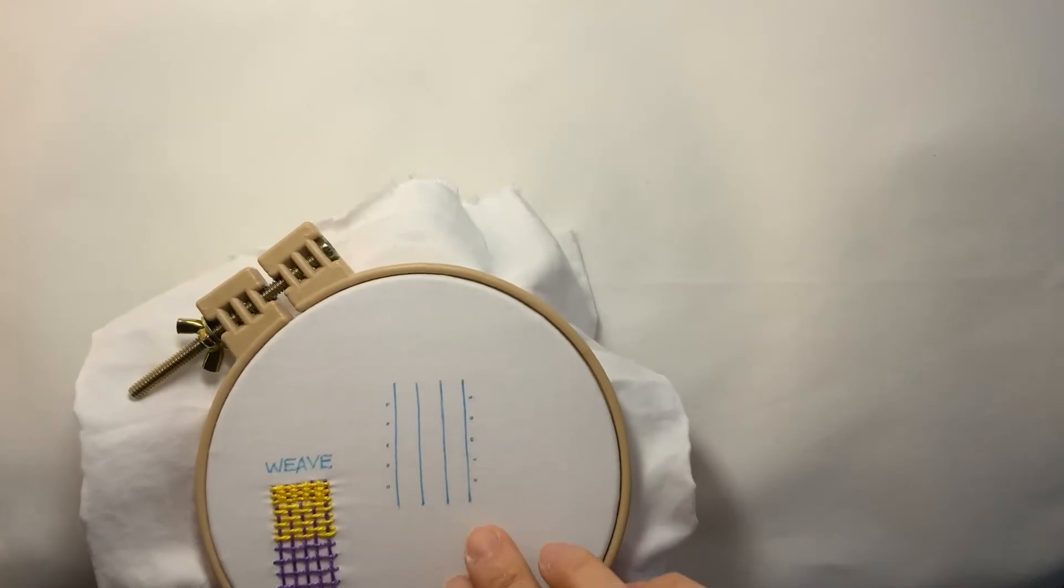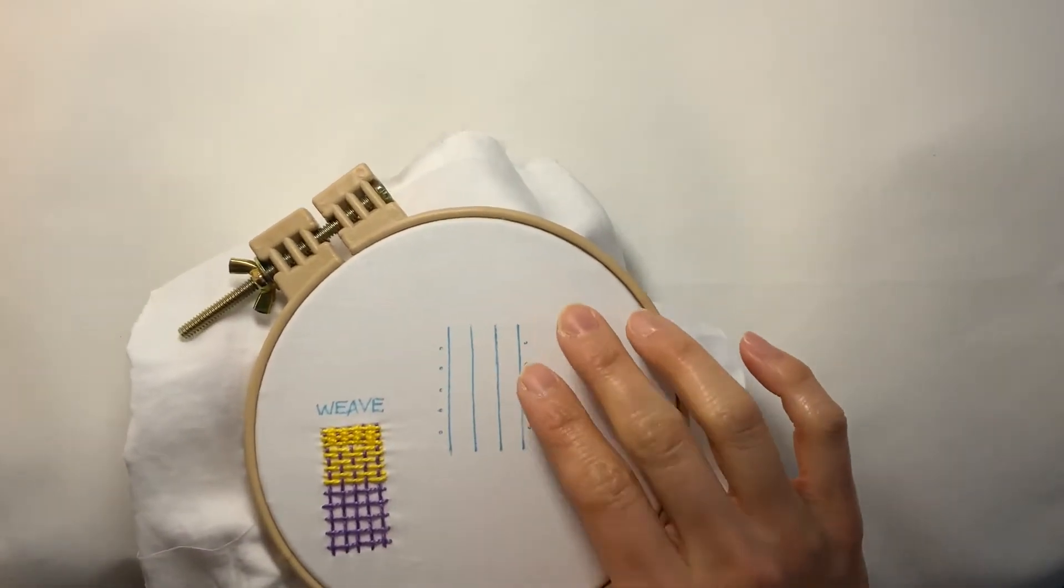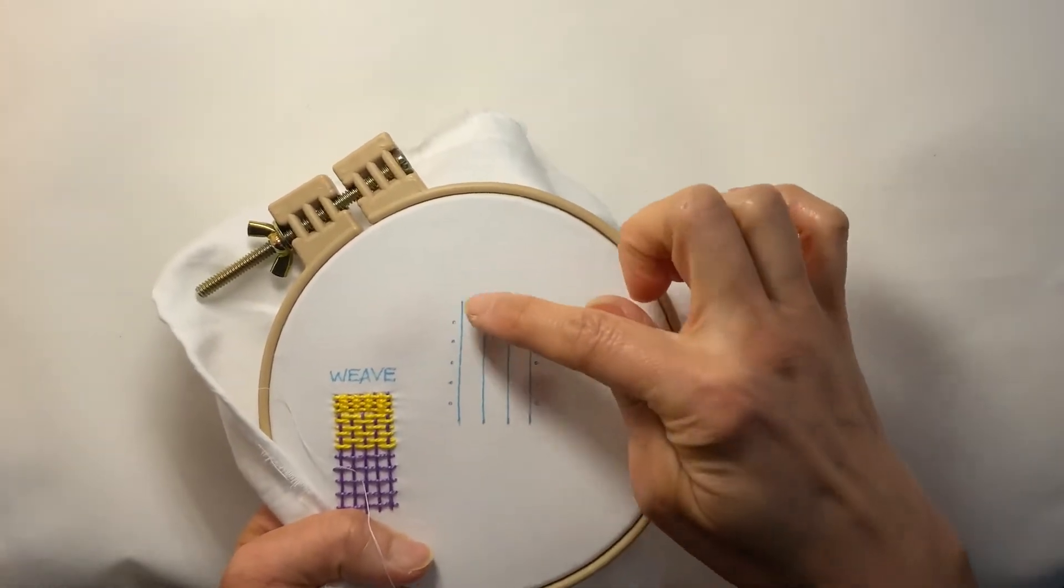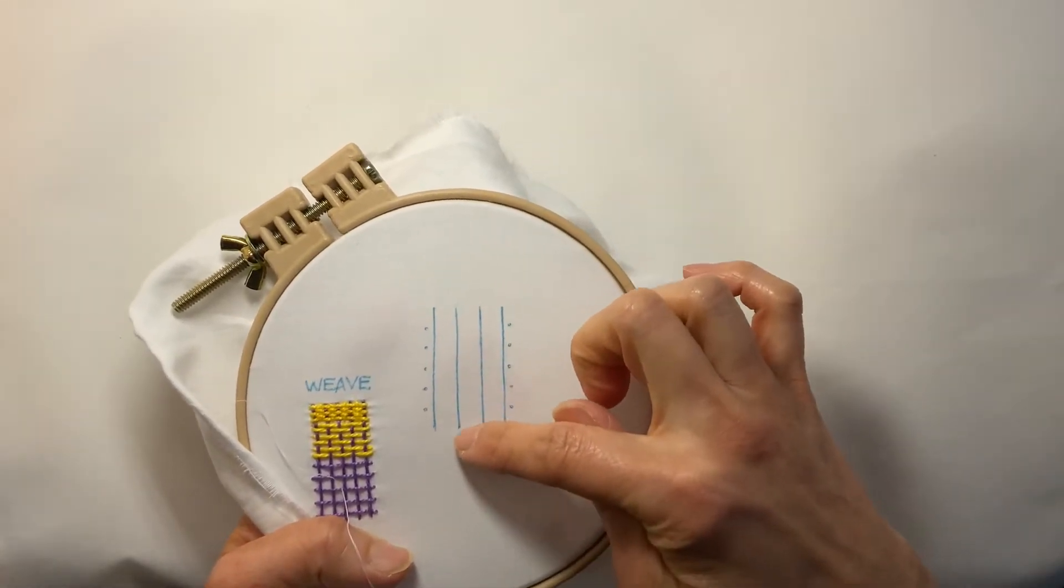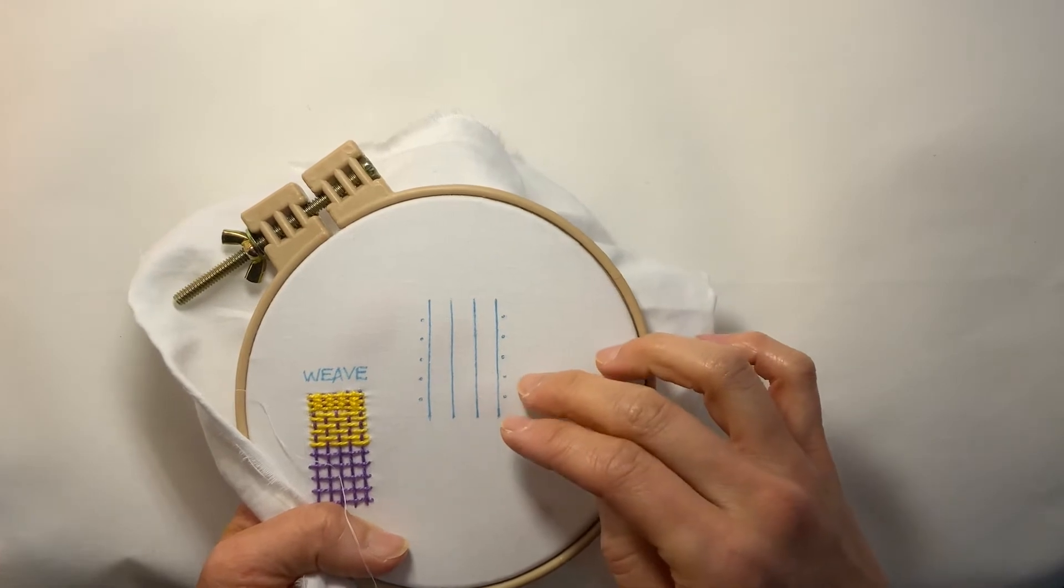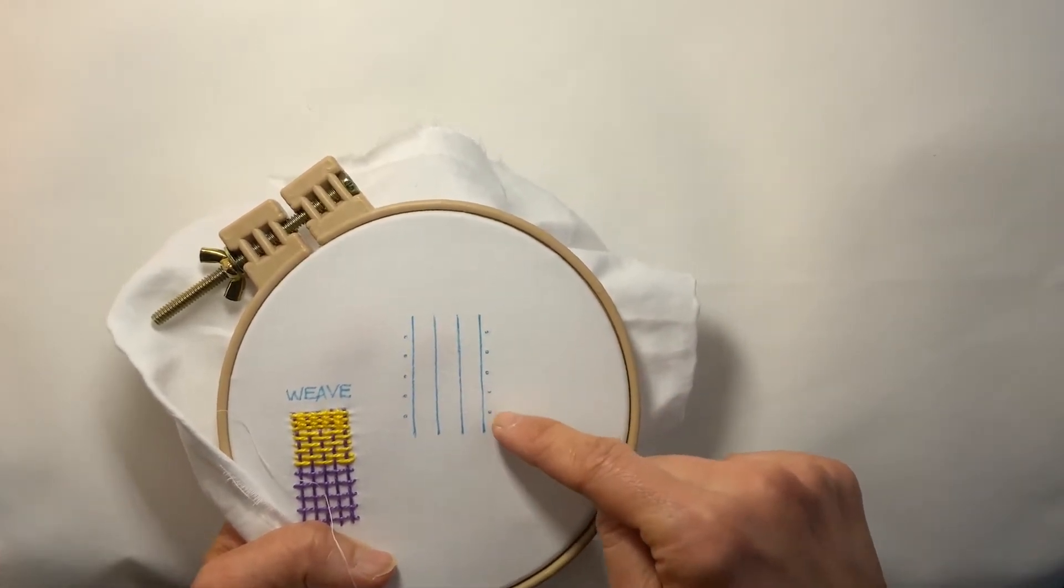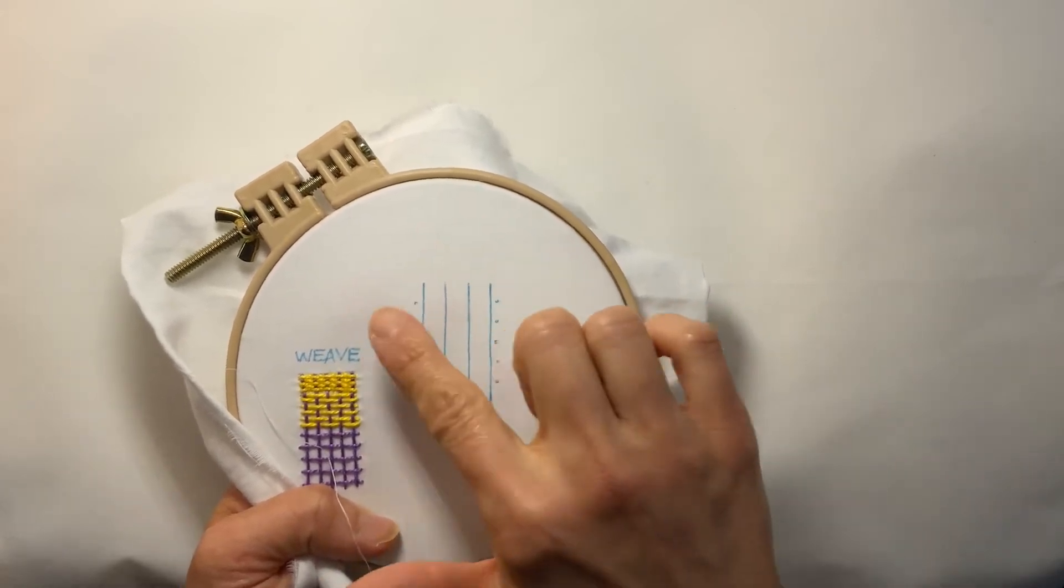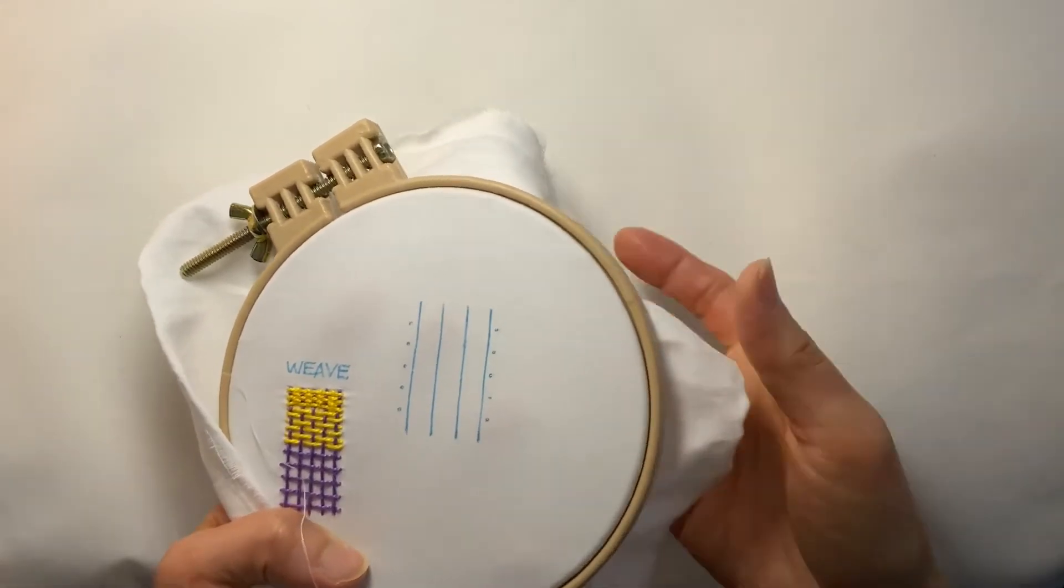I'm going to demonstrate using two thread colors today. So in regular weaving, the vertical stitches are called the warp yarns, and the yarn that's used to weave here, going left to right, are called the weft.